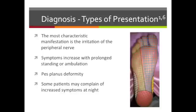Observation of posture will also be helpful because a pes planus deformity will many times put tension on the nerve. Also, in chronic cases, a patient may present with abductor and flexor weakness, typically starting with the great toe.